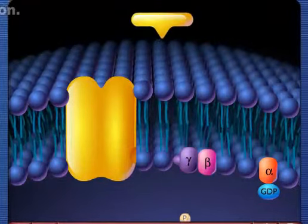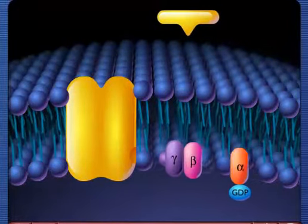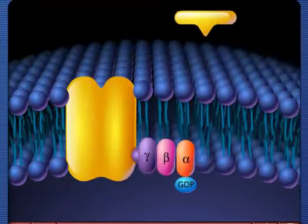The G protein subunits then recombine and attach to the receptor in the cell membrane.